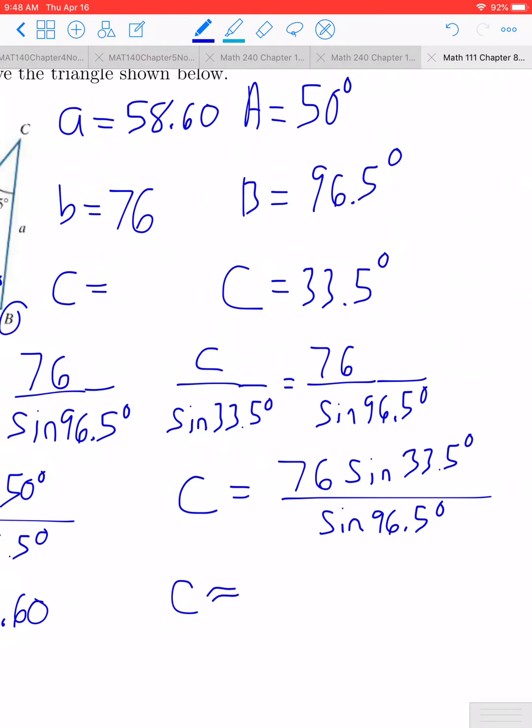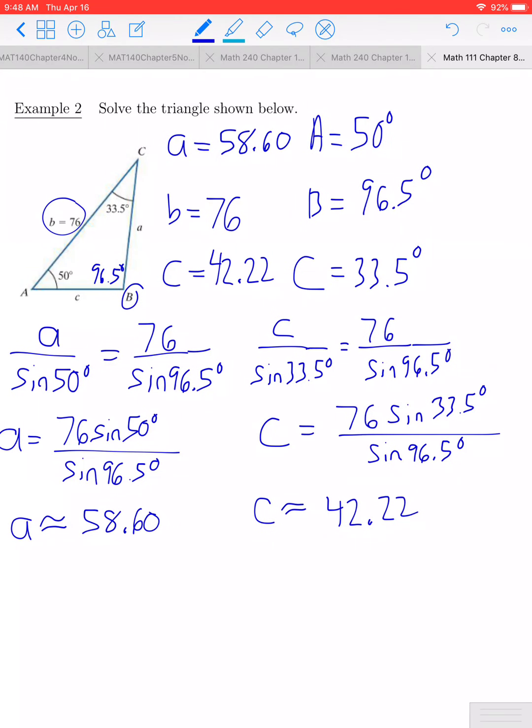We can go ahead and plug that into the calculator. And we should get 42.22. So 42.22 would be the length of side C, and we've now solved this triangle.